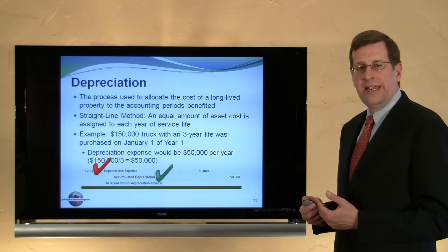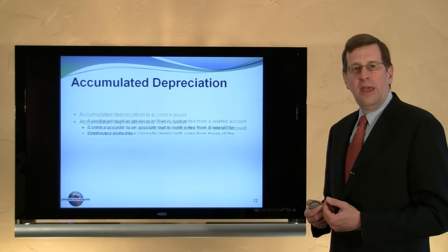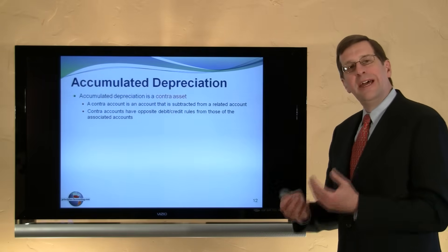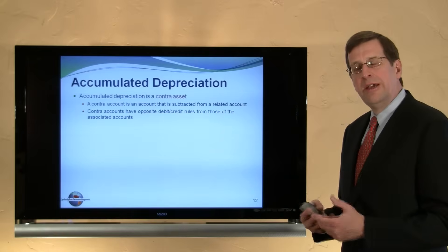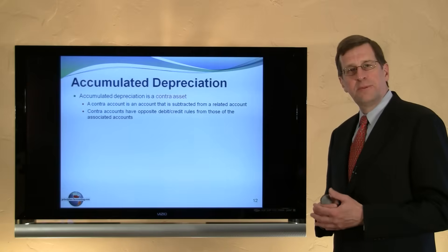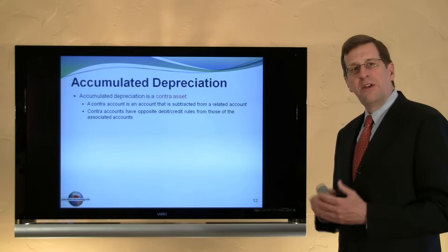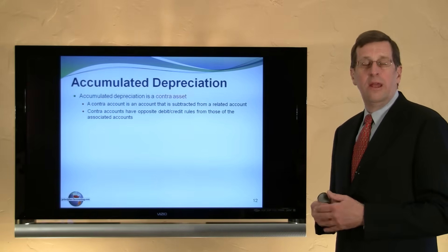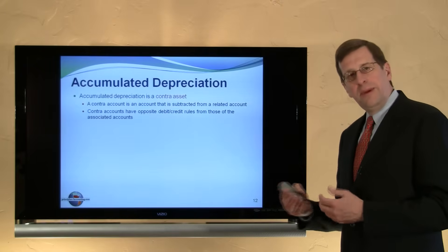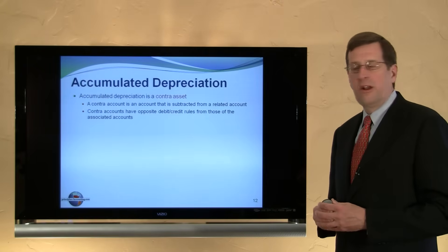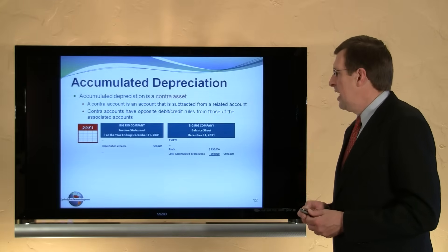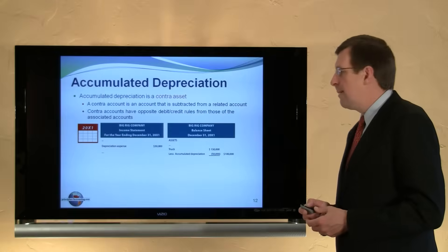I'm not crediting the asset directly, and here's why. Accumulated depreciation is a contra-asset account — a new concept. Contra accounts, in general, deduct from or subtract from another account, and they carry the opposite balance. Where equipment would have a debit balance, accumulated depreciation on the equipment would have a credit balance. It's an account that is subtracted from another account.